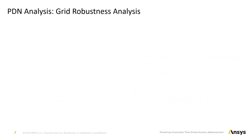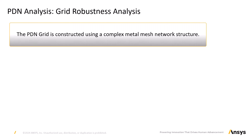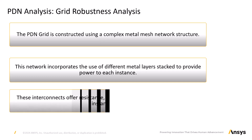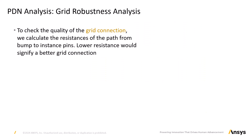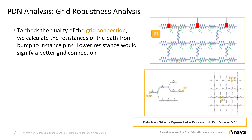PDN analysis — grid robustness analysis. As previously discussed, the PDN grid is constructed using a complex metal mesh network structure. This network incorporates different metal layers stacked to provide power to each instance. These interconnects offer resistance which can lead to a voltage drop at the instance pin. To assess the quality of the grid connection, we calculate the resistances of the path from bump to the instance pin. Bump here refers to the hookup point where package connections are made to the die. A lower resistance indicates a better grid connection. There are two types of grid resistance checks.